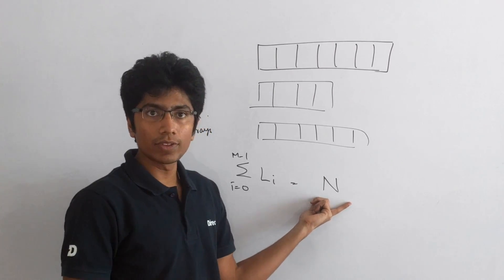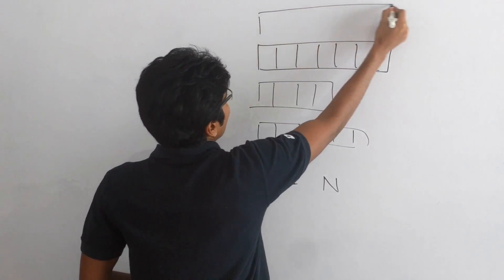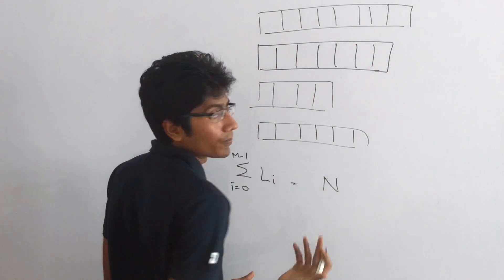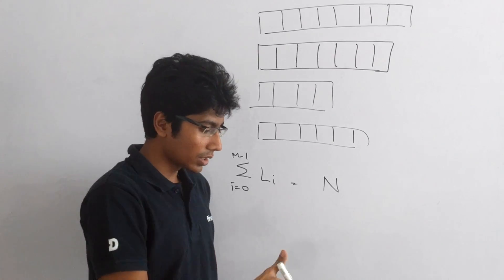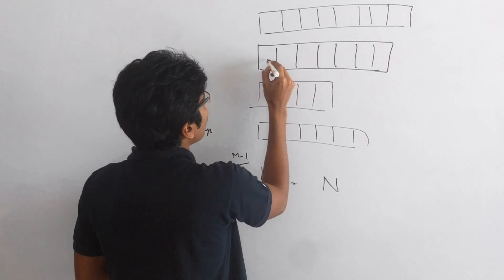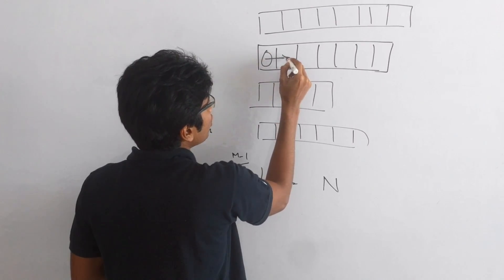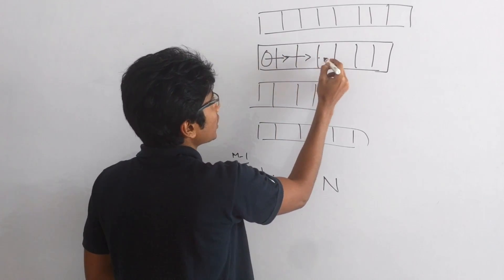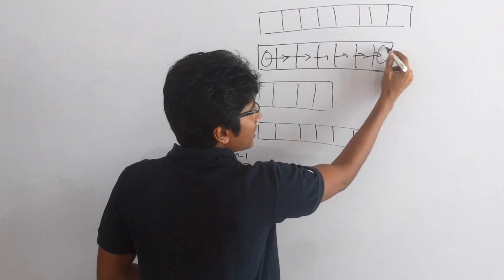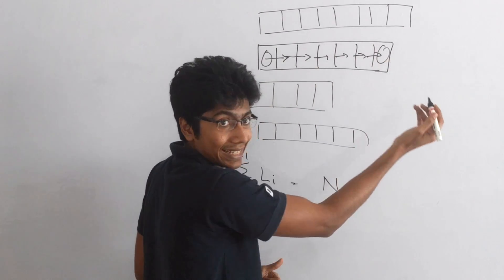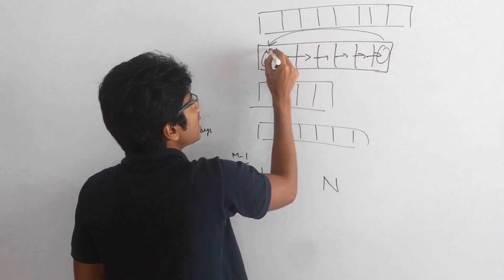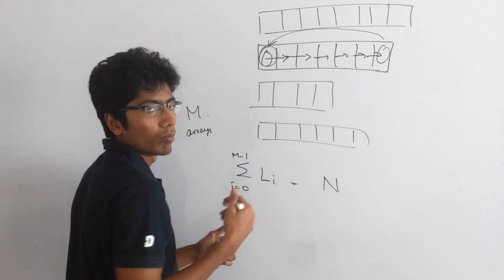So this is the length of the input basically. All of these arrays have one special property, which is that they can be cyclically shifted. What it basically means is that you can push one of these elements to this position, and then this element gets pushed to the forward position, and so on till the end of the array. This last element cyclically shifts itself back to the front — very similar to how modularity works.